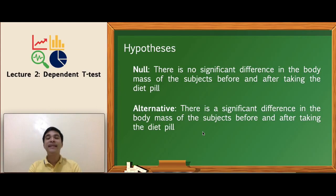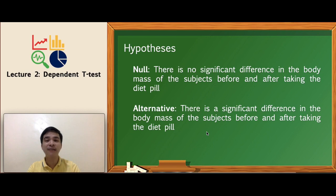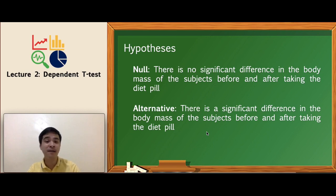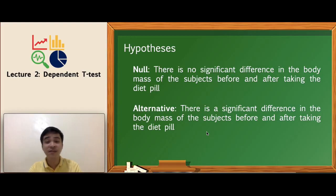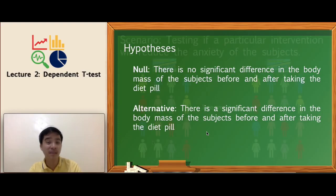In our research project, we have a separate section for the hypothesis. For our null hypothesis: there is no significant difference in the body mass of the subjects before and after taking the diet pill. For our alternative hypothesis: there is a significant difference in the body mass of the subjects before and after taking the diet pill.